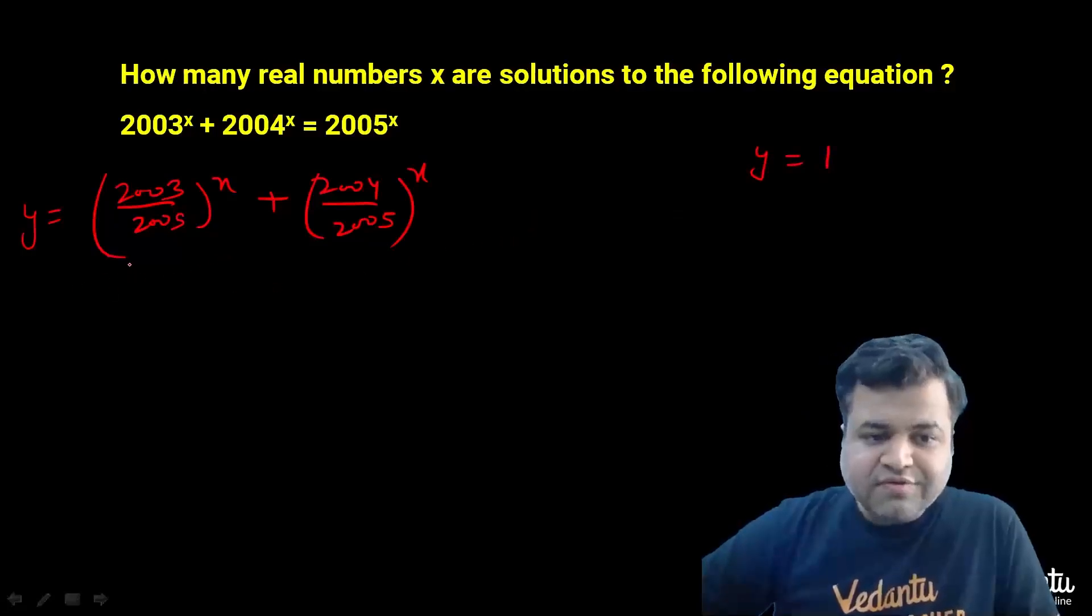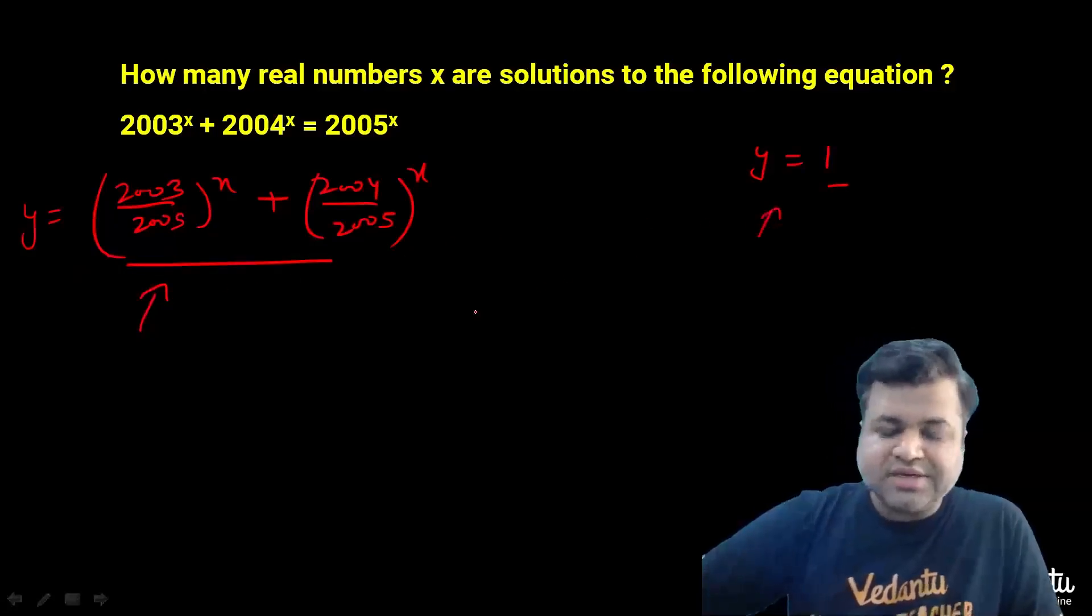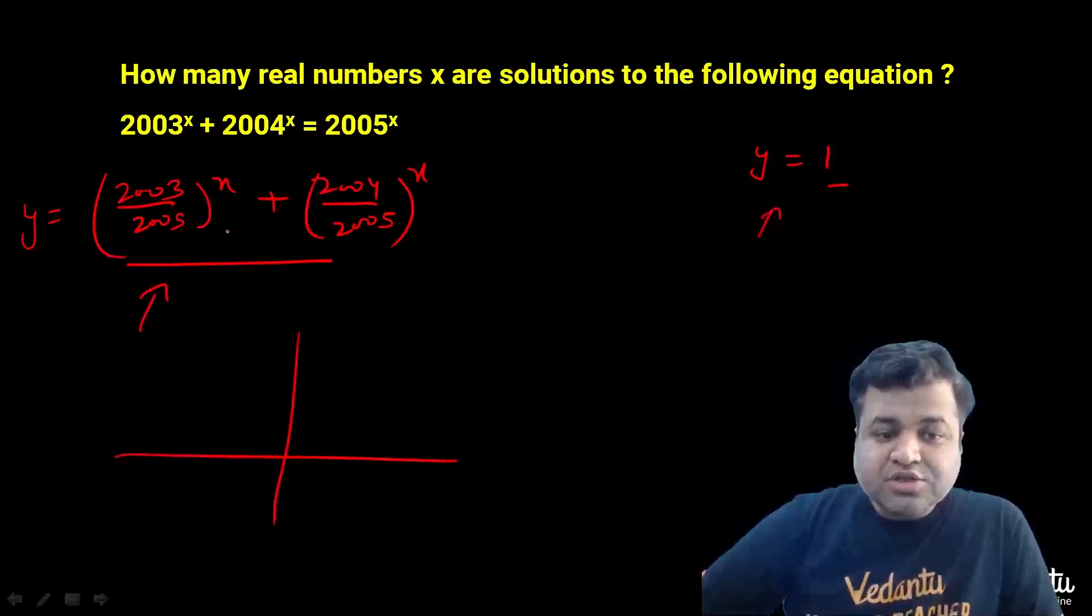We need to check when this equals 1, or we need to check when the graphs of these two functions intersect. Clearly this function keeps on decreasing.